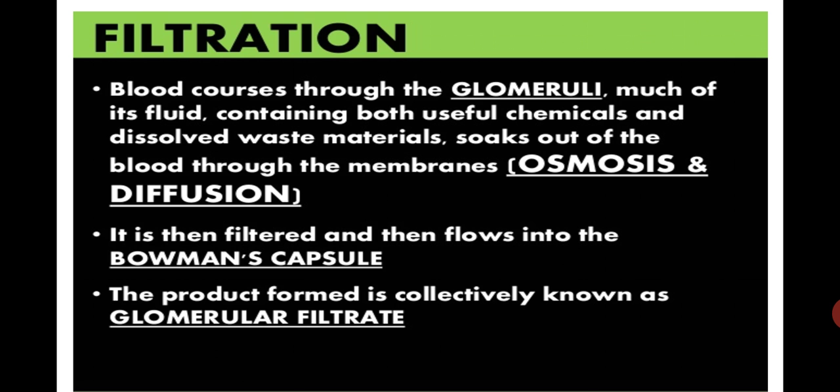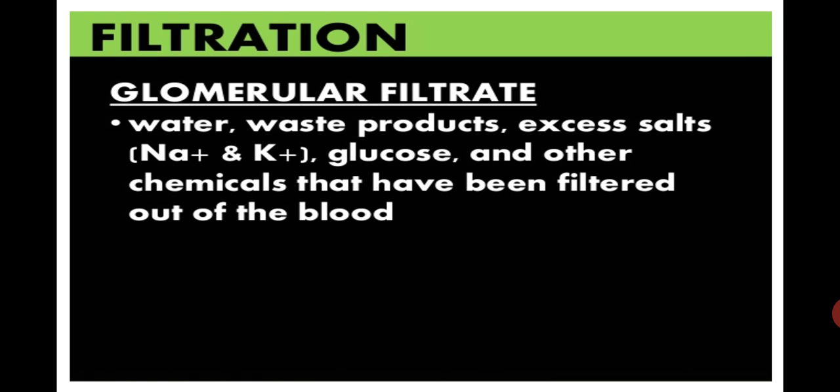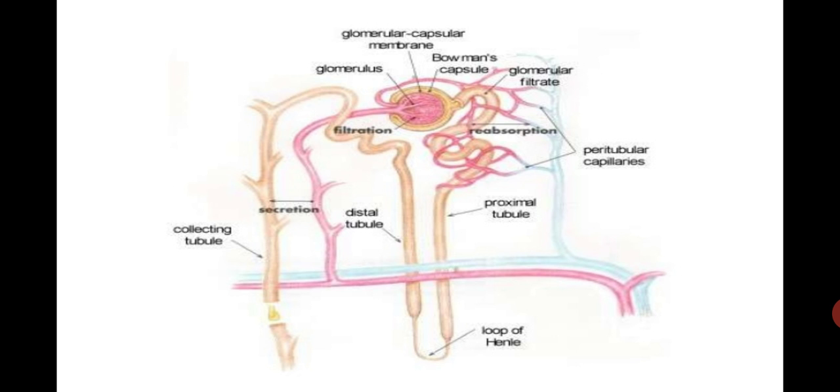The glomerular filtrate contains water, waste products, excess salts — mainly sodium and potassium — glucose, and other chemicals that have been filtered out of the blood. All of this has now come into the glomerular filtrate and is part of the Bowman's capsule.